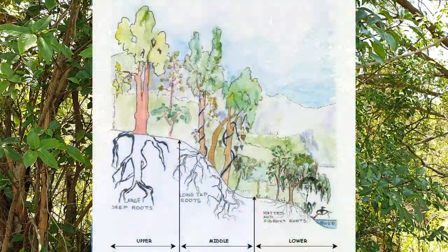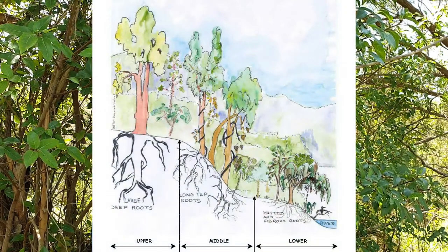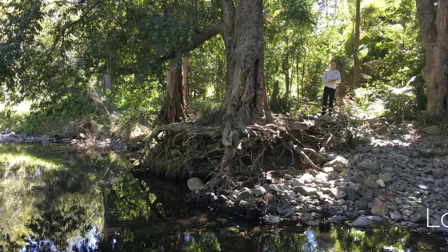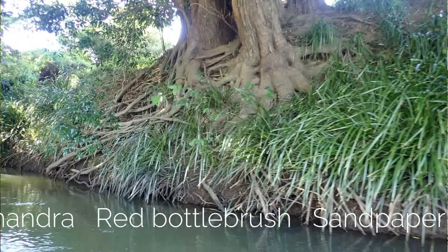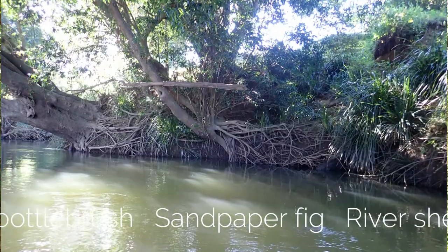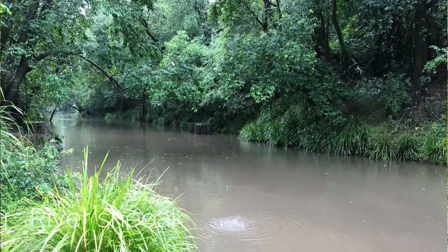Site-specific planning is important to the success of revegetation projects. There are generally three different zones to consider on the riverbank that each require certain types of trees and shrubs. The toe of the bank needs plants with matted, fibrous roots and flexible overhanging vegetation to slow flood water.